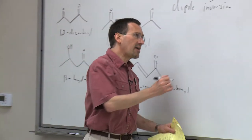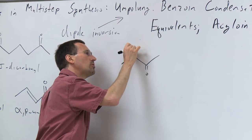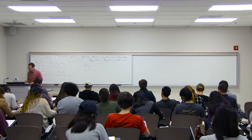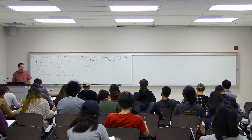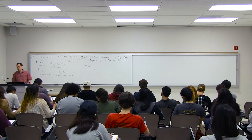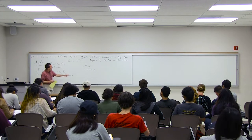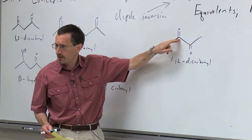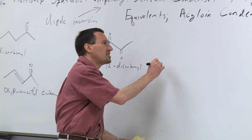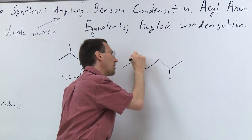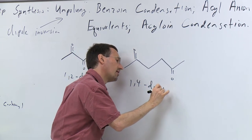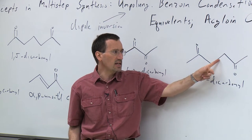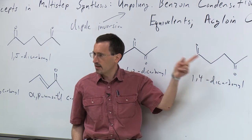But if we arrange our functional groups differently—if we look at a 1,2-dicarbonyl—things are more complicated. We don't see an obvious disconnection or an obvious way to put that molecule together based on natural propensities of a carbonyl group to be electrophilic. If I wanted to form this bond, I'd be stymied because I'd be connecting an electrophilic carbonyl with an electrophilic carbonyl. We have the same problem for a 1,4-dicarbonyl: connecting the center bond would give you an enolate reacting with an enolate, which is problematic.